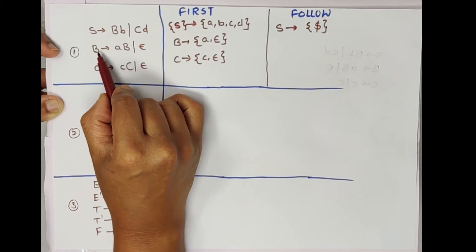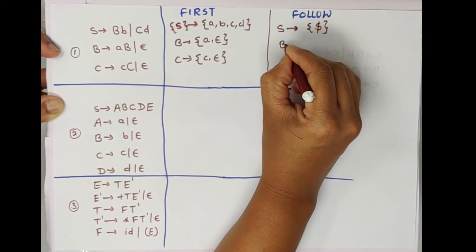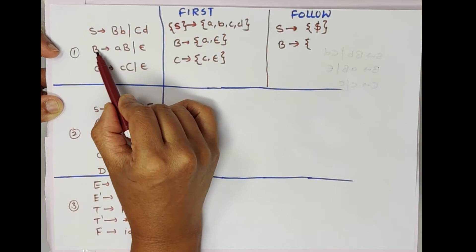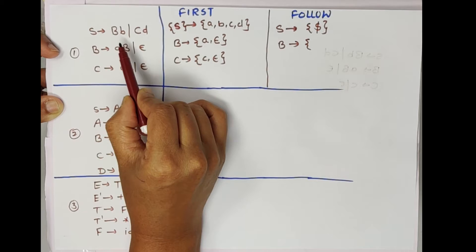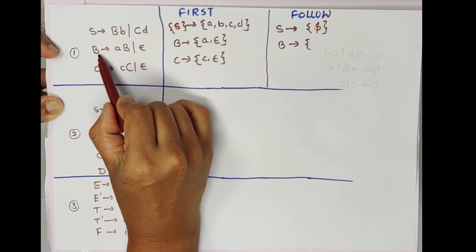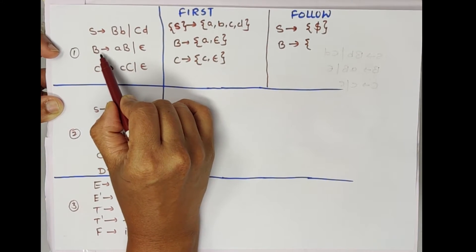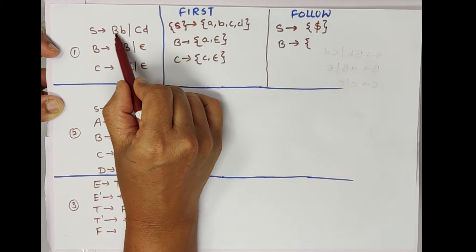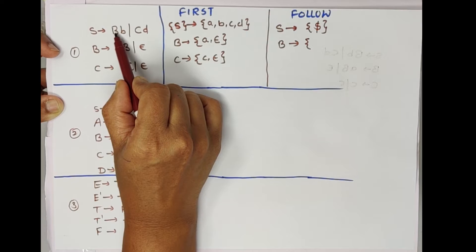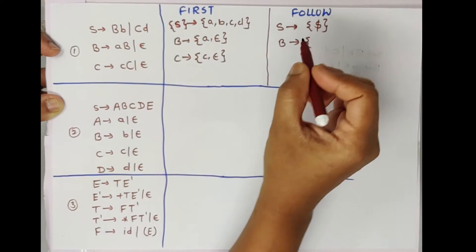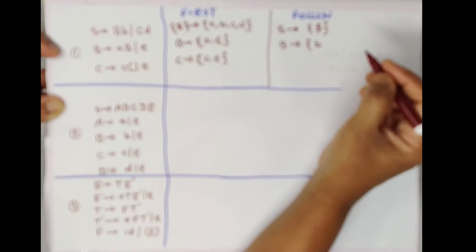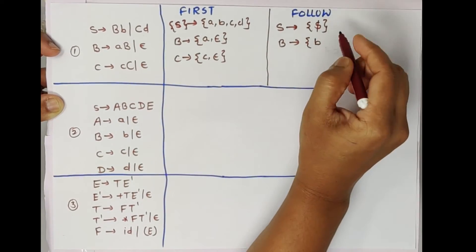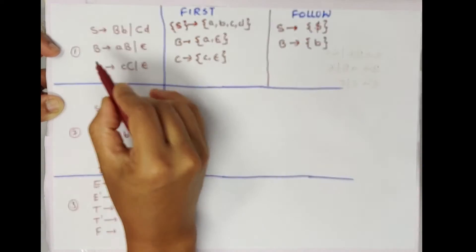Now we will find FOLLOW(B). B is present in the production S → BB. For this production, who is following B? Small b is following. So we will add this b. FOLLOW(B) = {b}.